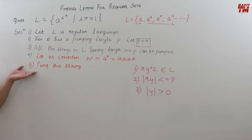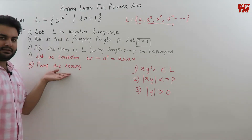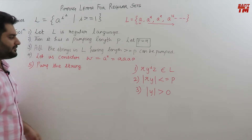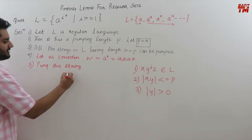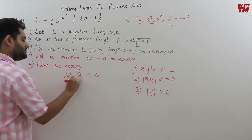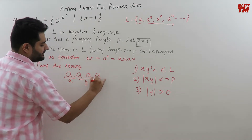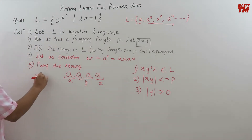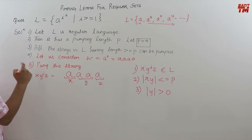The fifth step is now we will pump the string. In pumping the string, the step follows with division of the string. First, we will divide the string into x, y, and z — three parts. So consider a, a, a, a. If I consider the first a as x, the next two a's as y, and the last a as z. So this is x, y^i, z — which equals this when i equals 1.